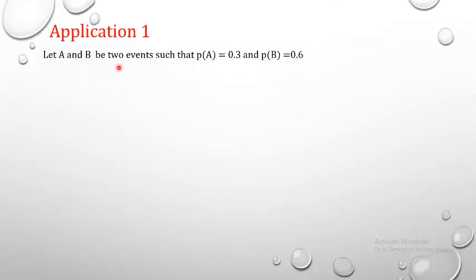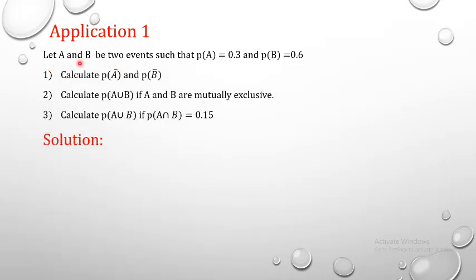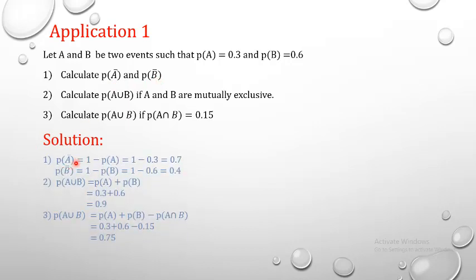Application: two events A and B with P(A) = 0.3 and P(B) = 0.6. Part 1: calculate P(Ā) = 1 − 0.3 = 0.7, and P(B̄) = 1 − 0.6 = 0.4. Part 2: if A and B are mutually exclusive, calculate P(A∪B) = P(A) + P(B) = 0.3 + 0.6 = 0.9.